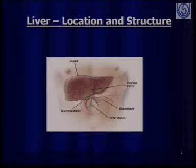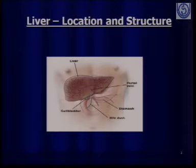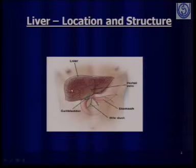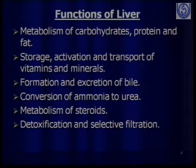Liver is the most important organ of our body. It weighs about 1500 grams and its structure, as you can see in the slide, has a right lobe and a left lobe. The liver is supplied with blood through the hepatic artery and a portal vein.